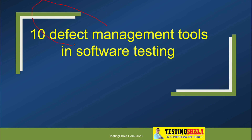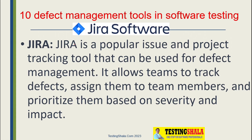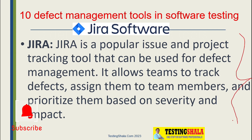The first important tool which is normally used in the market is Jira. This is a common bug tracking software normally used in many projects. Jira is a very good tool — it allows the team to track defects, assign them to the right team member, and even track project activities as well.